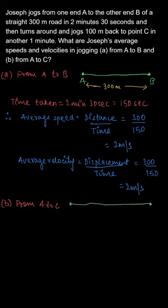Now for the second part, when Joseph is travelling from A to B and then from B to C, your total time taken will be 150 seconds from A to B plus 60 seconds from B to C.